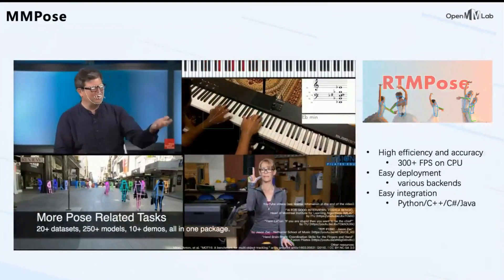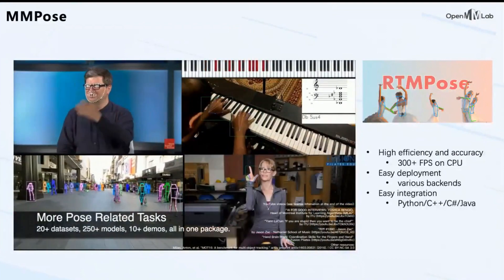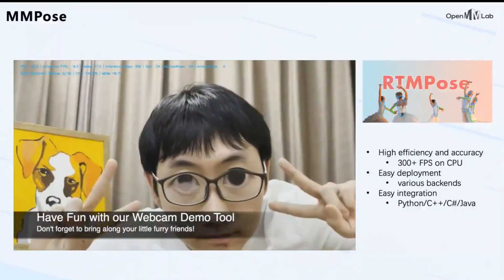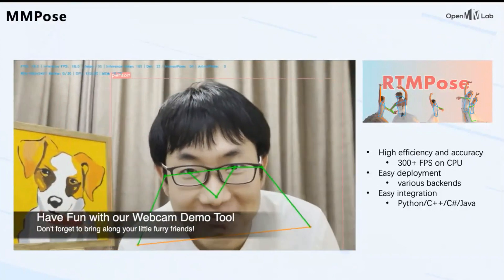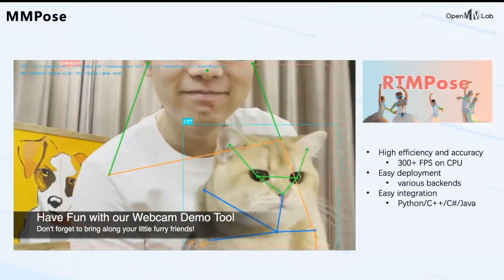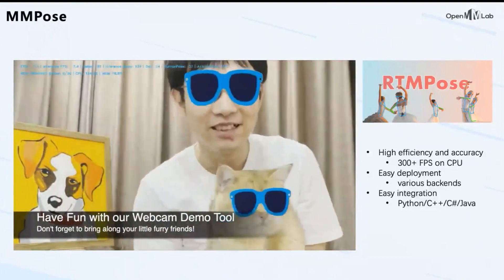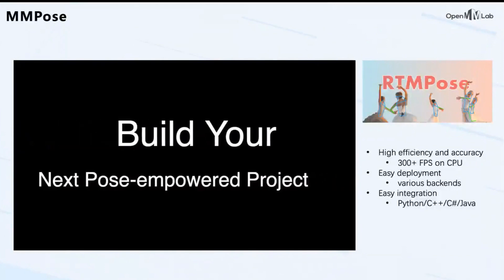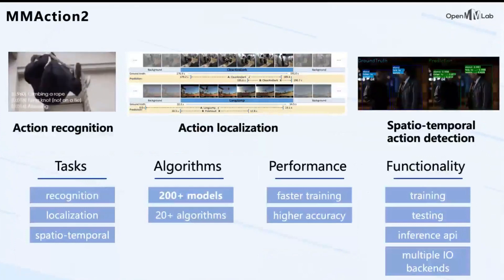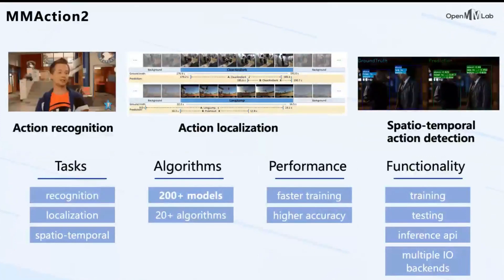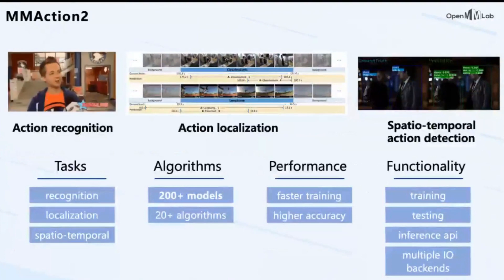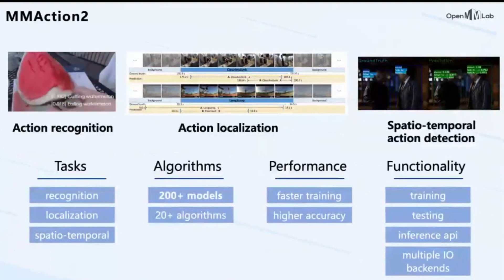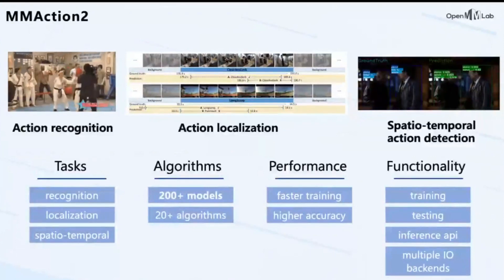RTMPose is easy to integrate into your own application. It supports Python, C++, C#, and Java APIs. MMAction2 implements various algorithms for video understanding tasks, including action recognition, action localization, spatial-temporal action detection, and skeleton-based action detection.